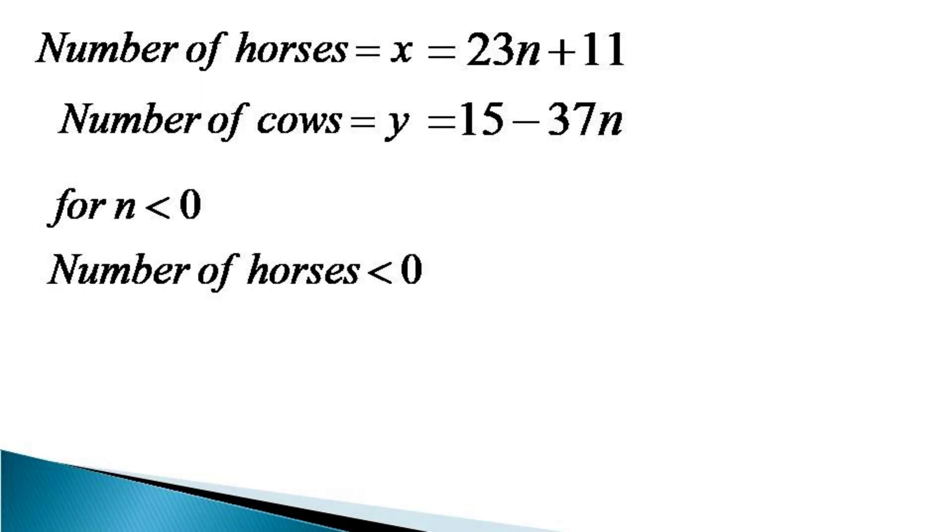For all the negative values of n we find that the number of horses becomes negative. So we cannot consider negative values for n. Now we check for positive values. We find that for all positive values the number of cows become less than 0 or negative.